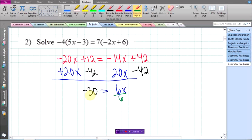I have one more step in here. I'm going to divide both sides by 6, and I get an answer, x equals negative 5.